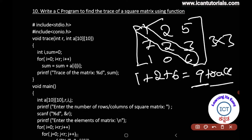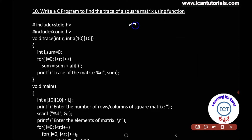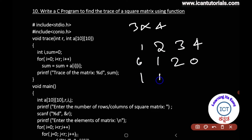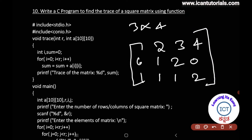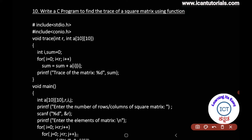For a non-square matrix, for example 3x4, we cannot properly find the diagonal elements or trace. Therefore, we can only find the trace in a square matrix.